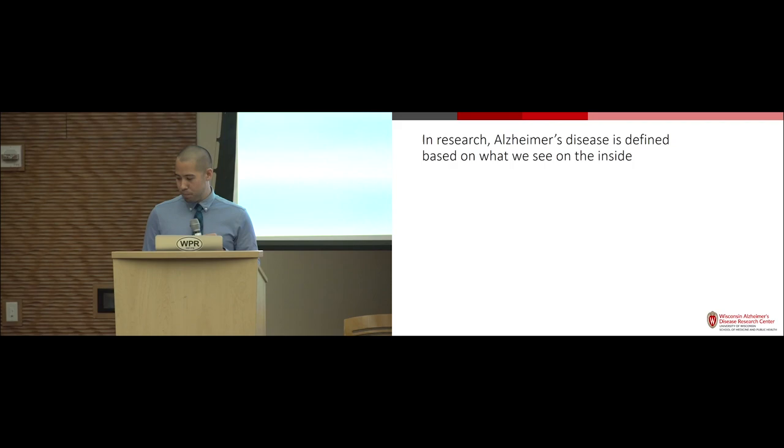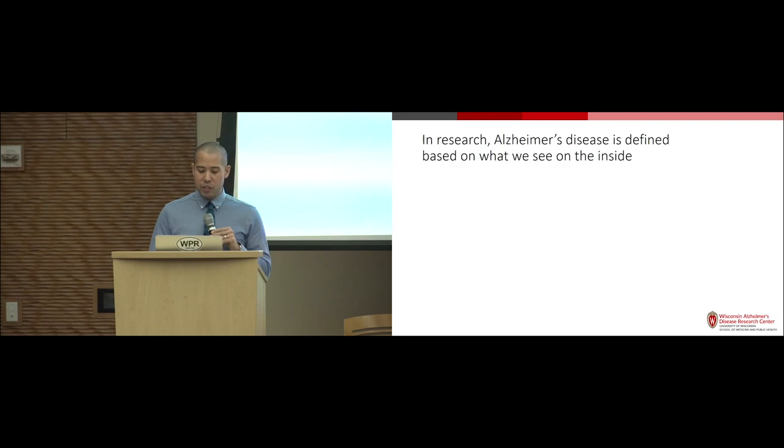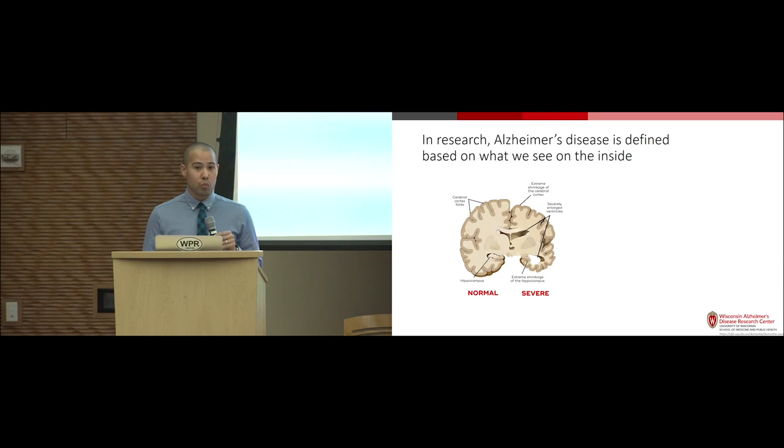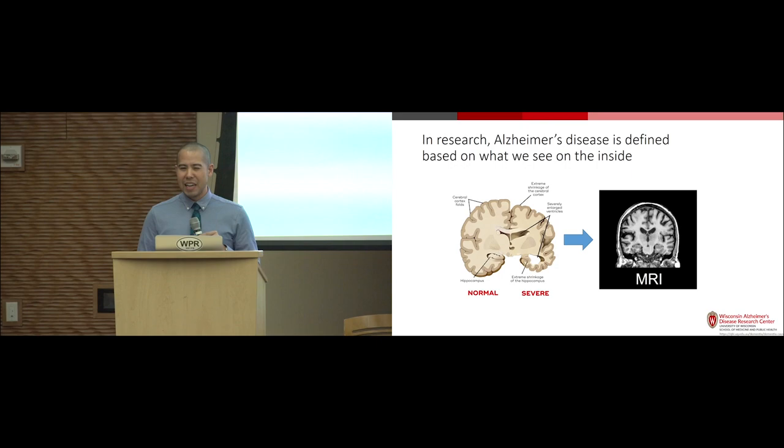In research, Alzheimer's disease is based on what we see on the inside. When we start with the brain itself, we see shrinkage that represents brain cell death. Fortunately, we can identify these changes in living people through MRI scans, but the problem is brain shrinkage occurs later in the course of disease and it's not unique to Alzheimer's disease.